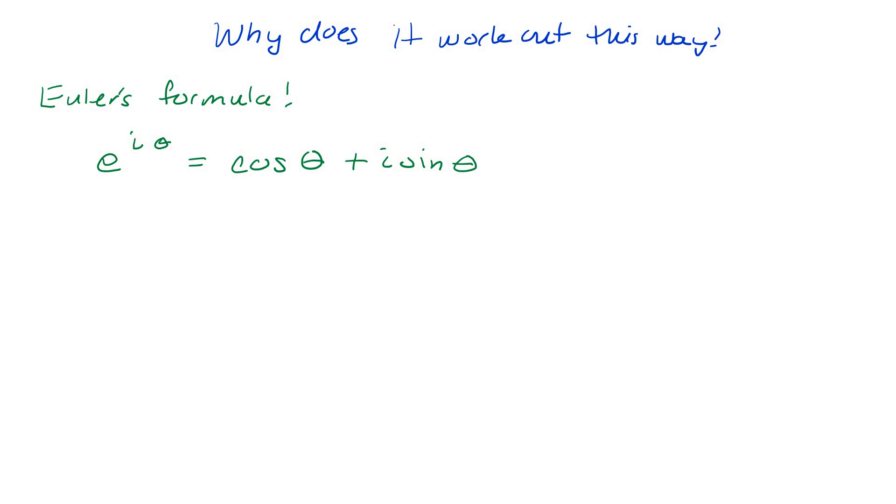So when I have a complex root, or when I have a complex number, any complex number can be expressed as r e to the i theta. And Euler's formula directly connects that to a complex number.